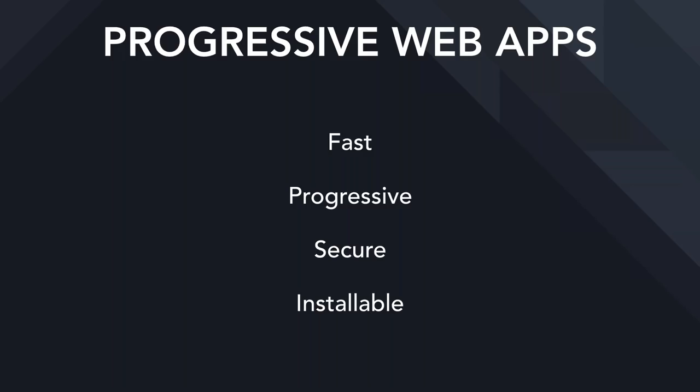Progressive web apps should be progressive. We want to make sure that all the web features and aspects of our app, if loaded on an older browser that doesn't have new features, should still be able to function — albeit in a degraded experience. But if you are on a brand new Chrome or a desktop environment, you should be able to access these new features pretty seamlessly.